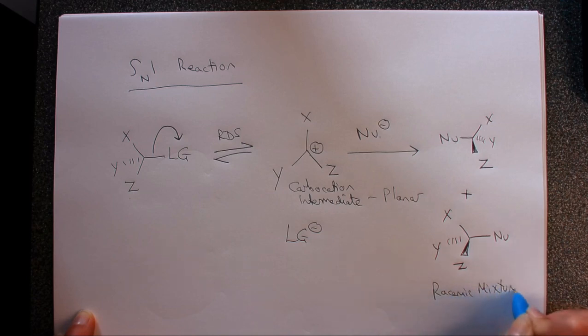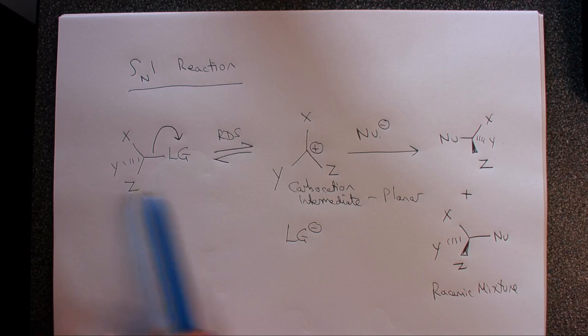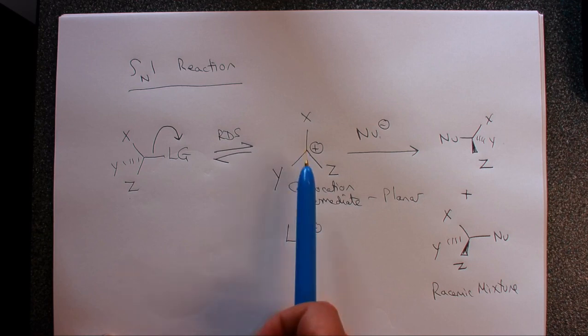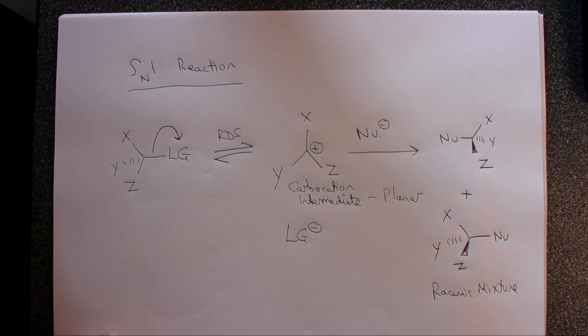Racemic meaning that we've got equal quantities of each of the different stereoisomers. So that's the essential features of the SN1 reaction: we lose our leaving group from the substrate in the rate determining step, we form our planar carbocation. Because it's planar, the nucleophile can attack from above or below, giving us equal quantities of the two different stereoisomers - a racemic mixture.